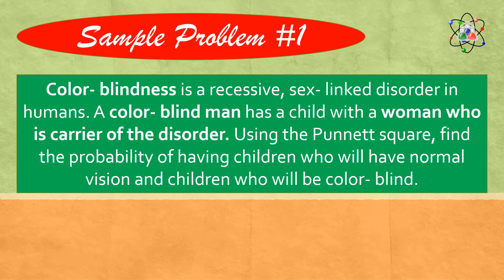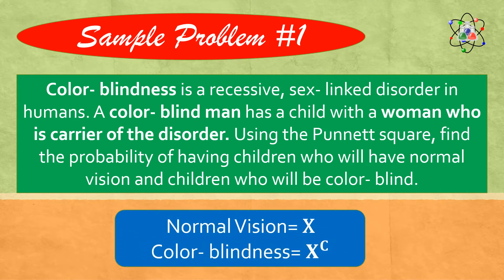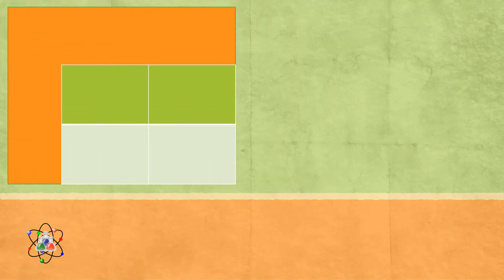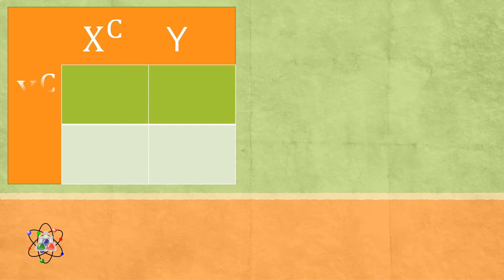Colorblindness is a recessive sex-linked disorder in humans. A colorblind man has a child with a woman who is a carrier of the disorder. Using the Punnett square, find the probability of having children who will have normal vision and children who will be colorblind. Remember that X is for normal vision and XC is for being colorblind. By using this Punnett square, let us cross the parents. According to the problem, the father is colorblind, so we can represent him as XCY. And the mother is a carrier of the disorder, so she can be represented as XCX.